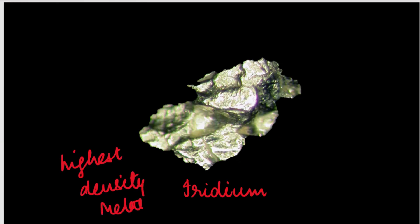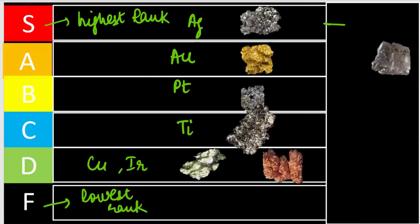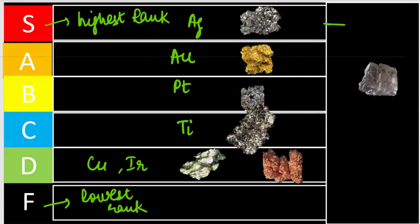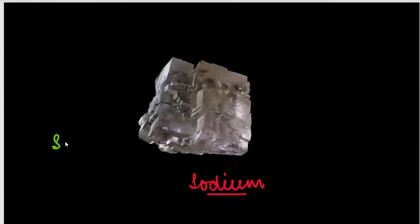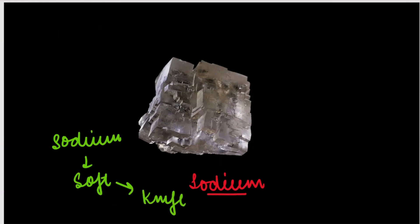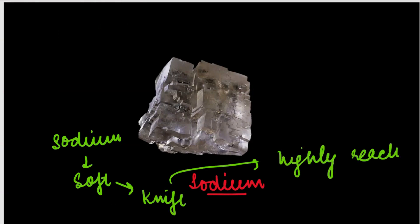We now get to the priority order — our last element in the lowest rank is sodium. Sodium's lustrous surface is the least among these metals. Sodium is such a soft metal that it can be cut with a knife. And sodium is so highly reactive that if you leave it in the air, it will catch fire very quickly.